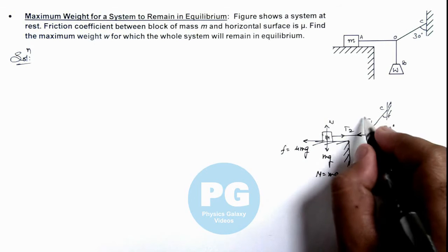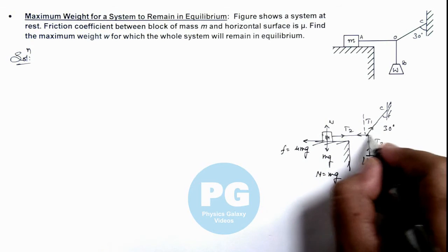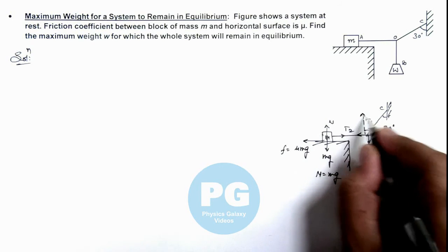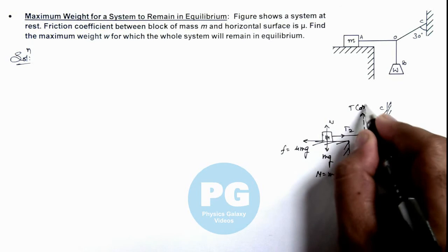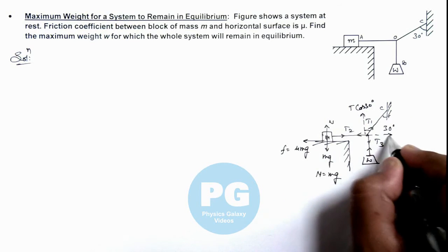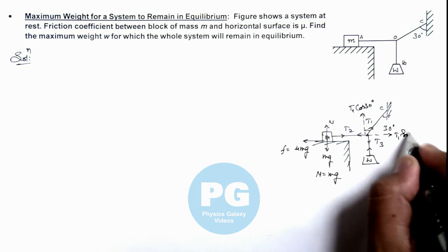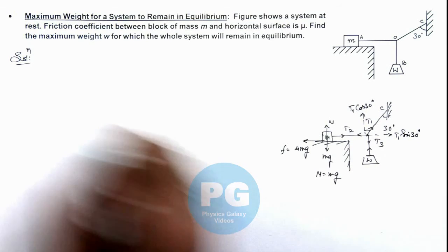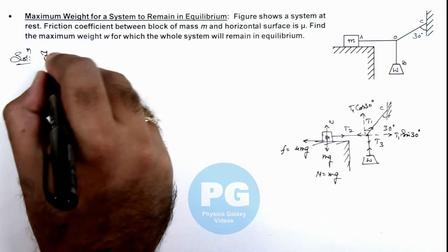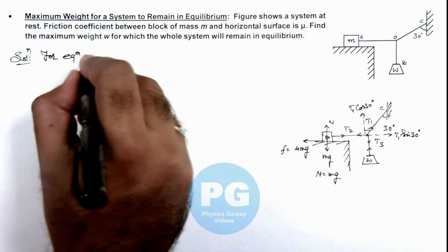So here, for the equilibrium of bodies, we can resolve this tension upward as t cos 30 degrees, and here it'll be t1 sin 30 degrees. So here we can write for equilibrium of blocks.